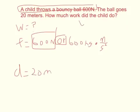The equation, again, is W equals F times D. Plug that in. W equals 600 newtons times 20 meters.